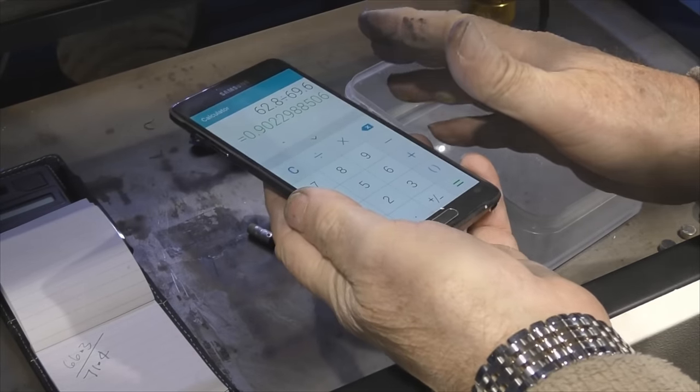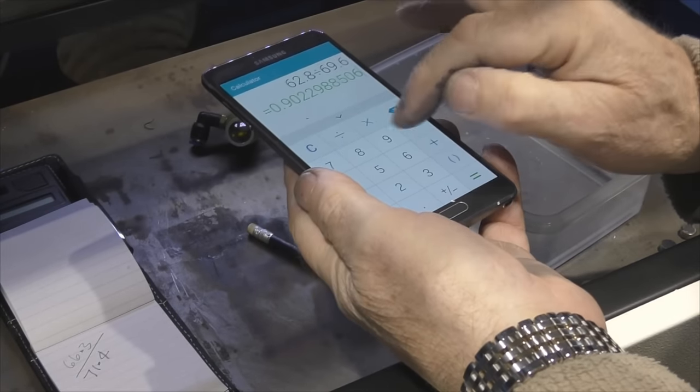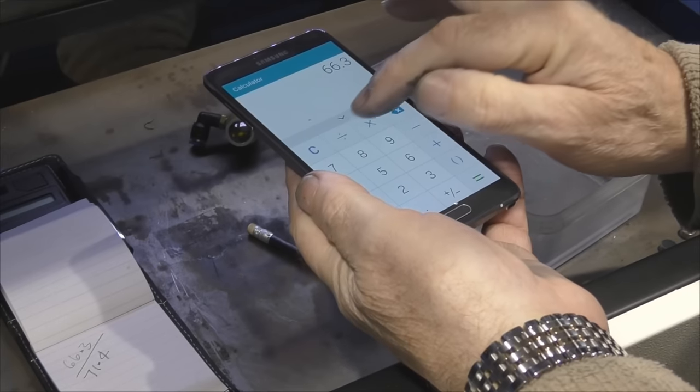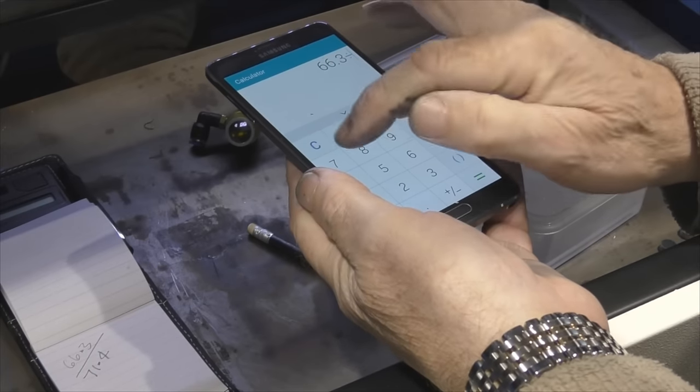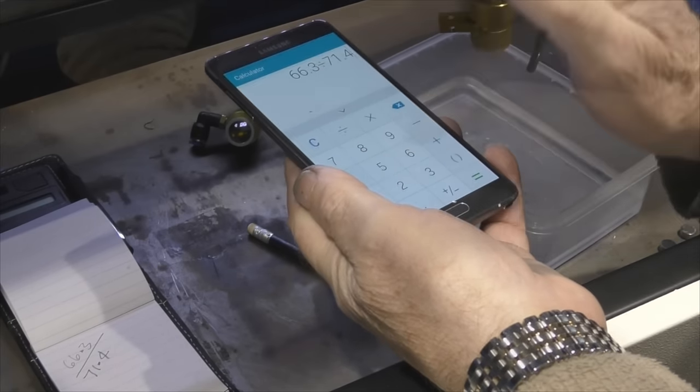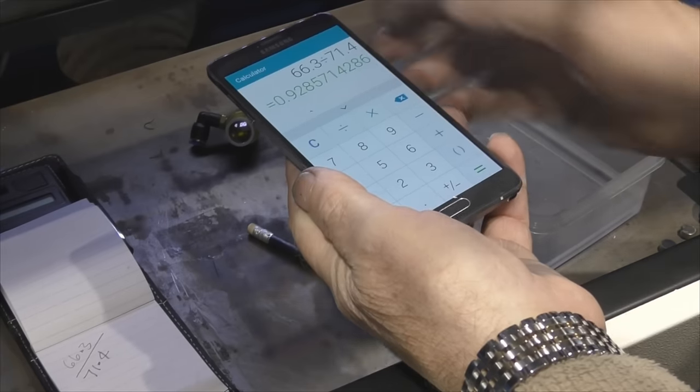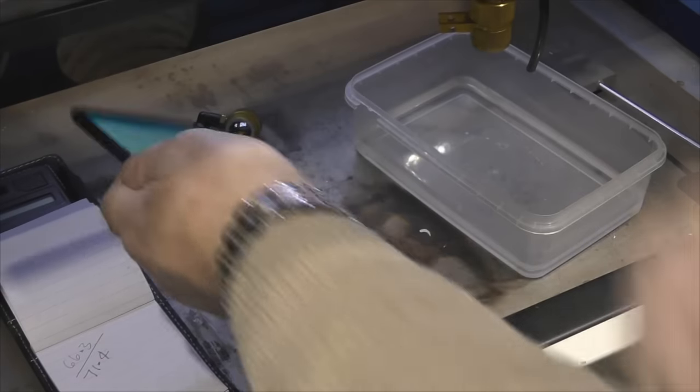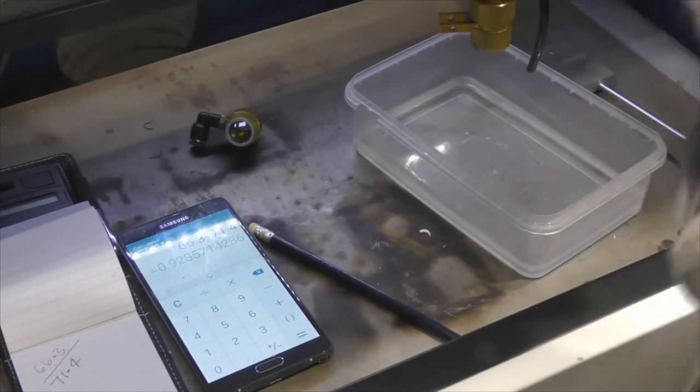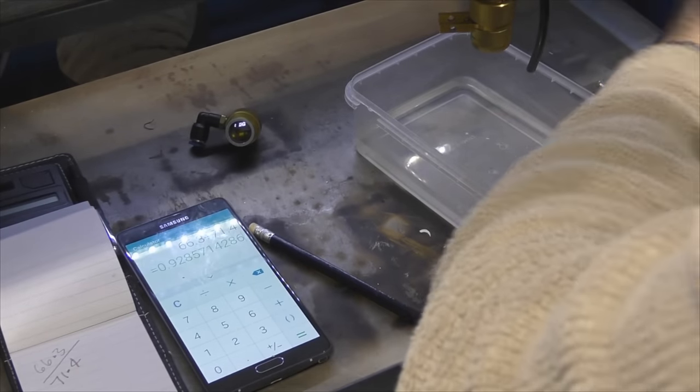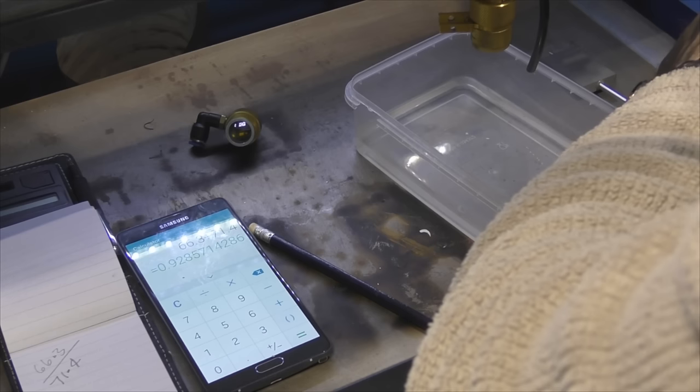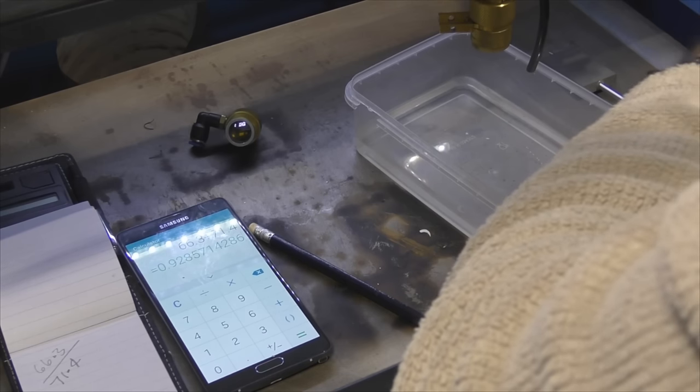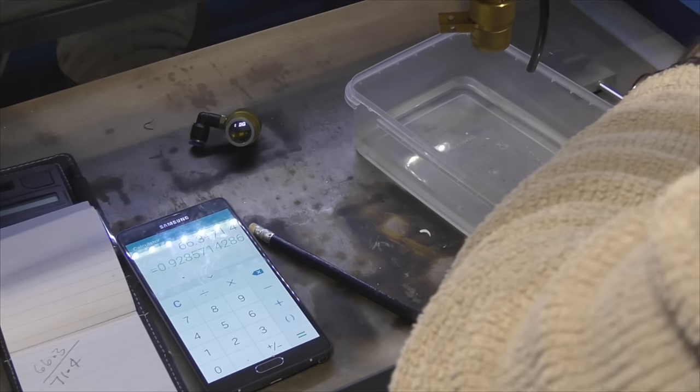66.3 divided by 71.4 equals 93% so that's 7% which is marginally over the 2% per mirror that we were given to anticipate so it was a near success to prove that copper mirrors will do a job.